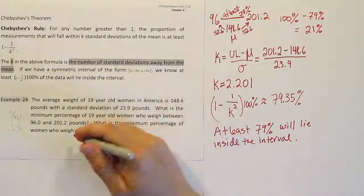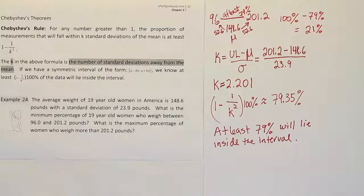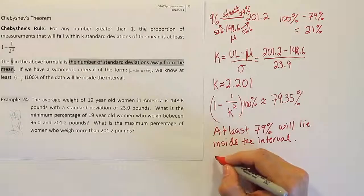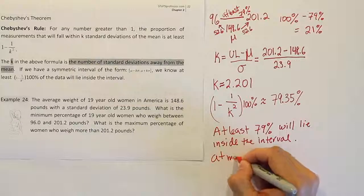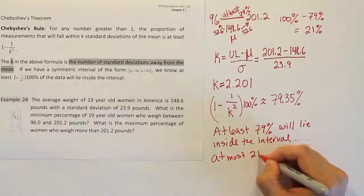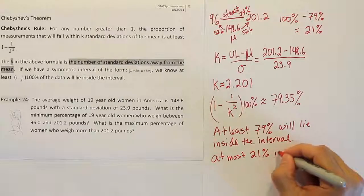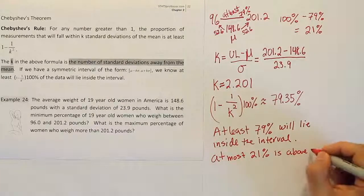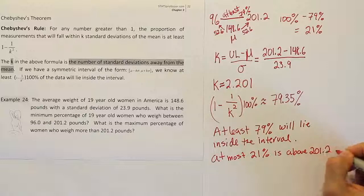The maximum percentage of women that will weigh more than 201.2 pounds is 21%. That's the absolute maximum. So in other words, you will say down here that, at most, 21% is above 201.2 pounds.